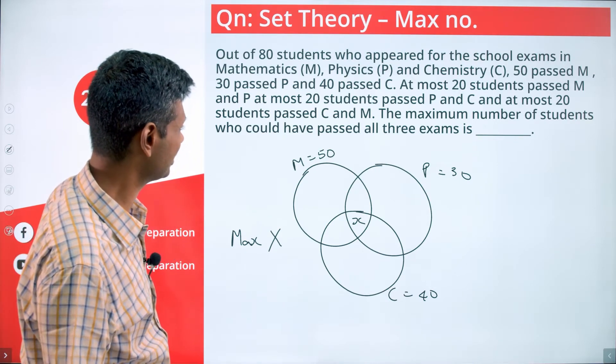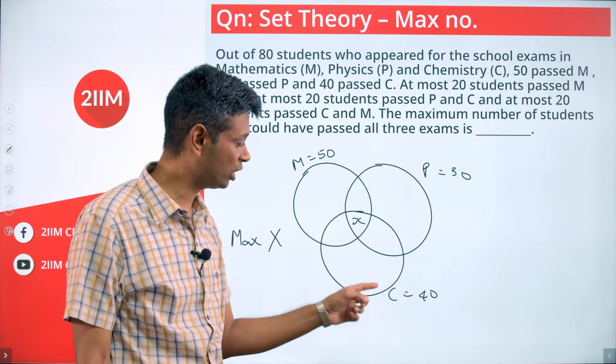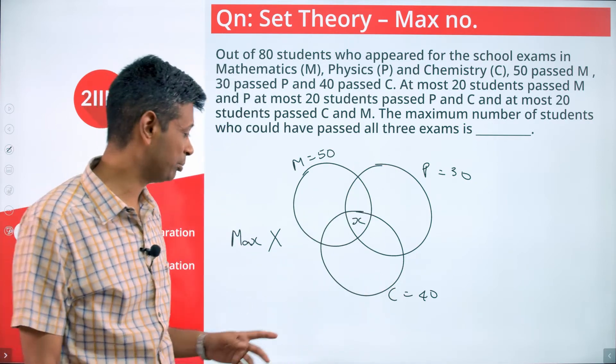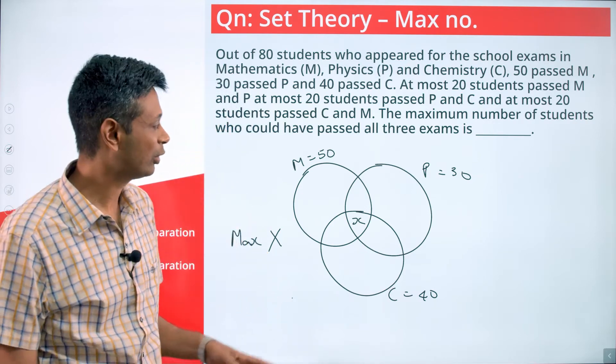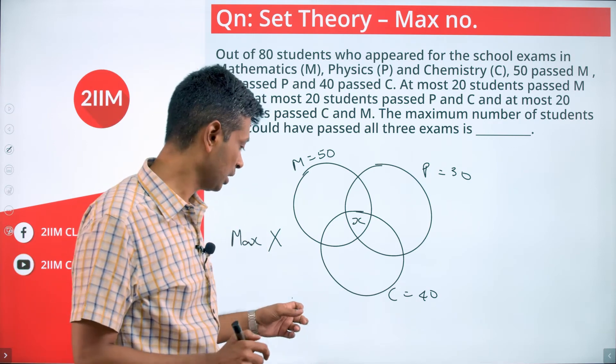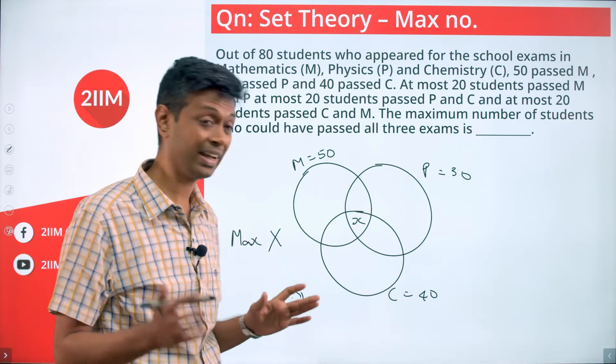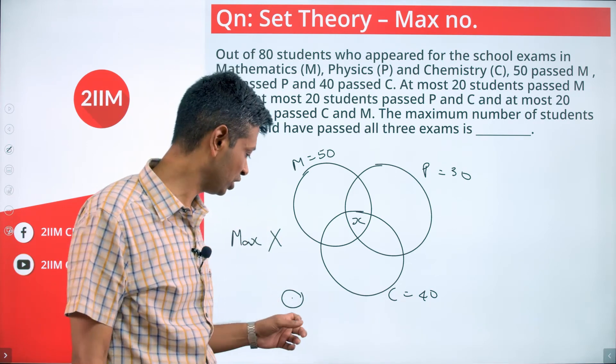Out of 80 students who appeared for school exams, assume the total is 80. M union physics union chemistry is 80. There could be people outside also; the total could be less than 80 technically, but we're looking to find the maximum. I think 80 will work. Technically, people who passed none of the exams - that is a factor for us to keep in mind. I'm going to ignore that and say let us plug it at 80.